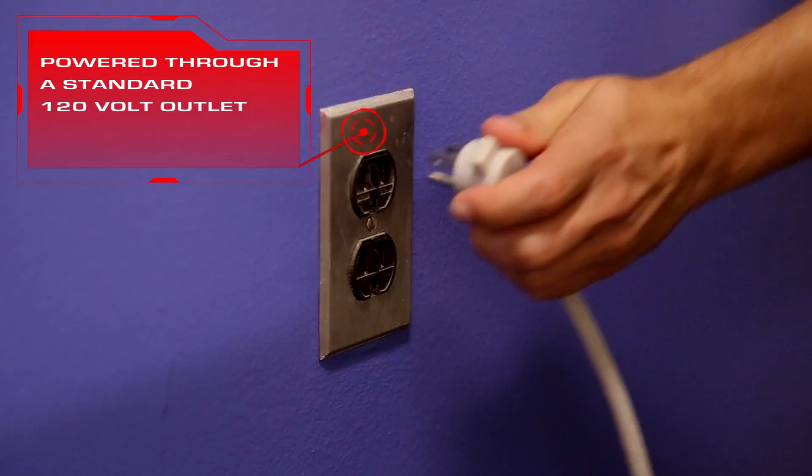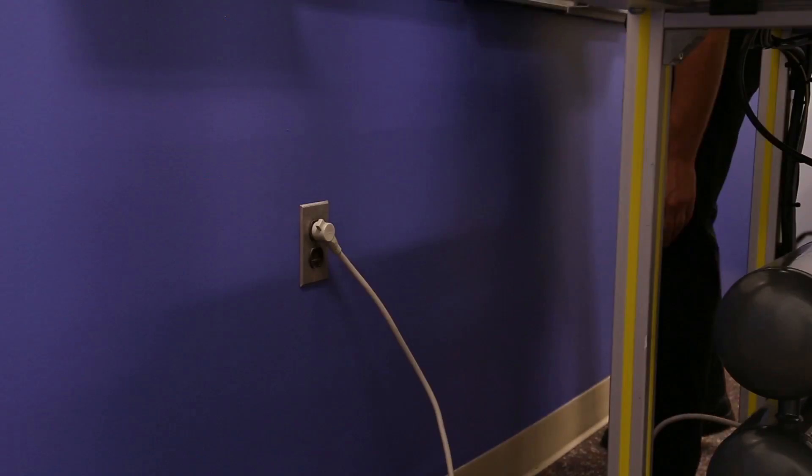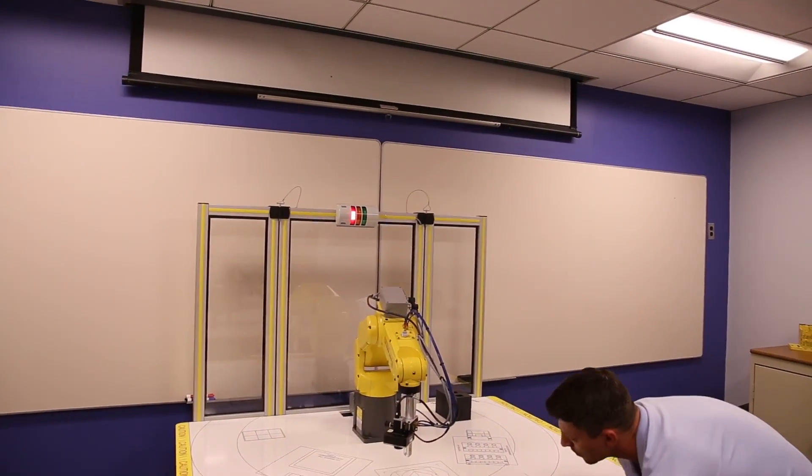The FANUC Fenceless CertCart is powered through a standard 120-volt wall unit. No additional power supply is required.